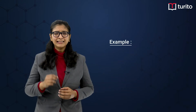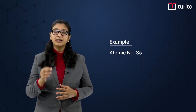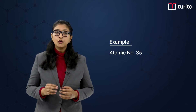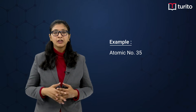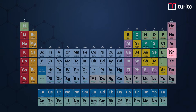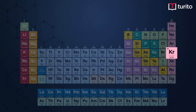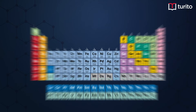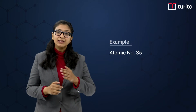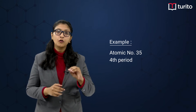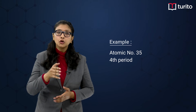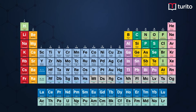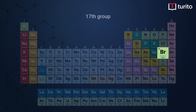Now, let us say that I have a particular atomic number 35. How do we know which period and which group it belongs to? As you know, 36 — that is krypton — belongs to the 18th group and the fourth period. That means, since it is 35, it will be a part of the fourth period only. And as the number is one less than the noble gas, it implies it will belong to the 17th group.